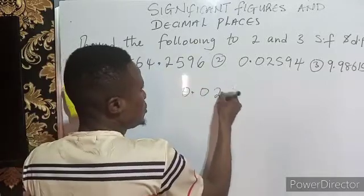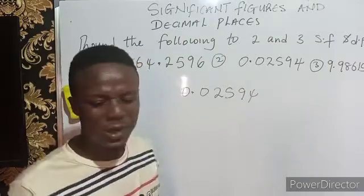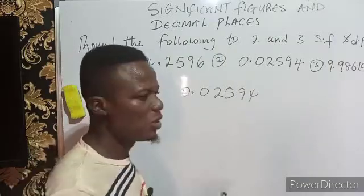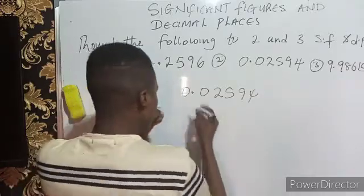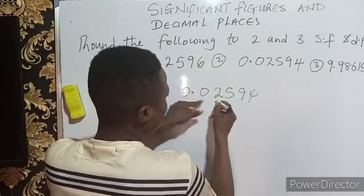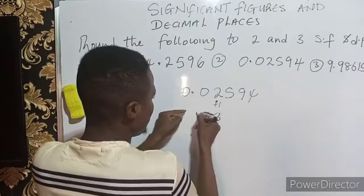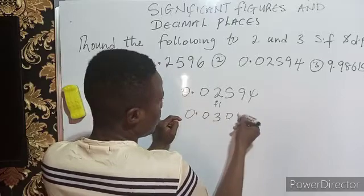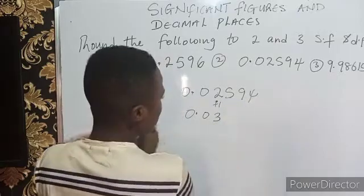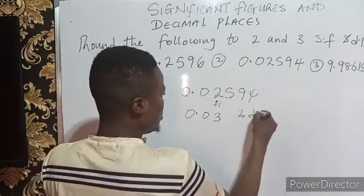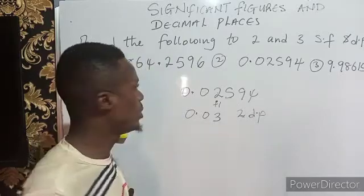Let's put the same number 0.02594 to two decimal places. In decimal places, whether zero is starting it or not, you are only interested in where you see the decimal point. You begin to count from the decimal point: one, two — stop here. This number is up to five, so you add one; two becomes three. You have 0.03 — every other number turns to zero, and zeros are insignificant, so the answer is 0.03 to two decimal places.